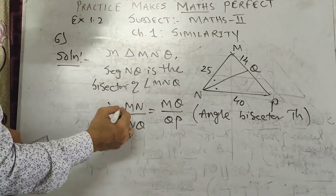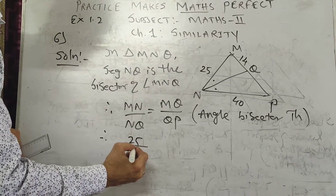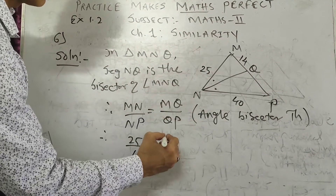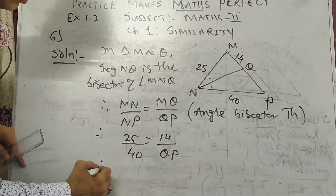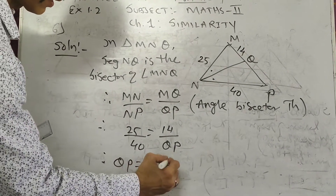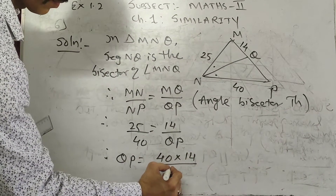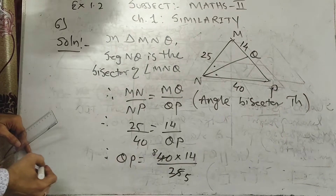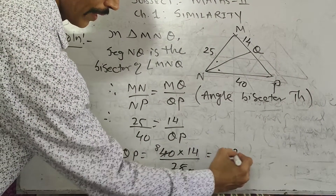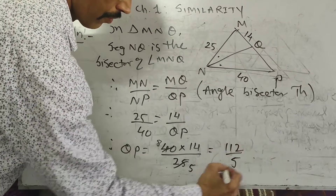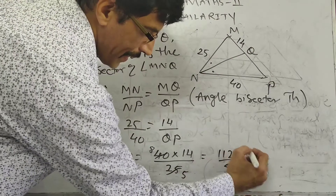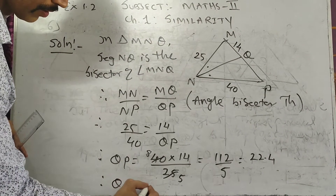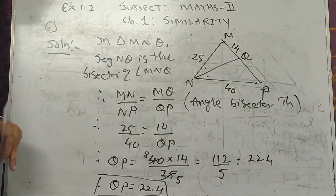Putting in the values: MN is 25, NQ is 40, NQ is 14. QP equals 40 into 14 upon 25. Simplifying: 5 × 8 = 40, 14 × 8 = 112, giving 112 upon 5. Therefore QP is equal to 22.4.